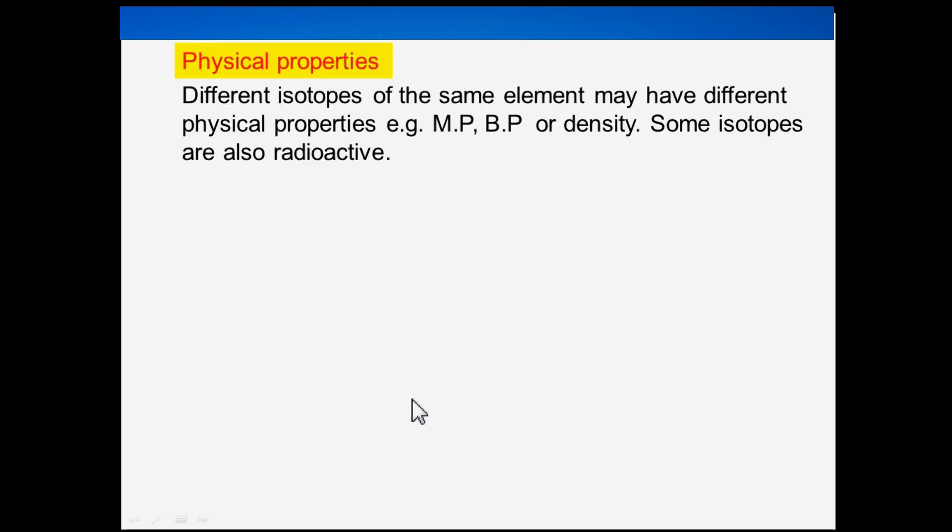Different isotopes of the same element may have different physical properties, for example, melting point, boiling point, or density. Some isotopes are also radioactive.